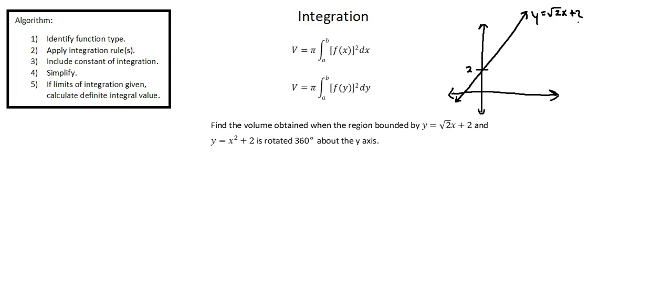And our second function, y equals x squared plus 2, which is a parabola. The axis of symmetry is the y-axis and the vertex will be at (0,2). So drawing in that parabola. Here we have y equals x squared plus 2.